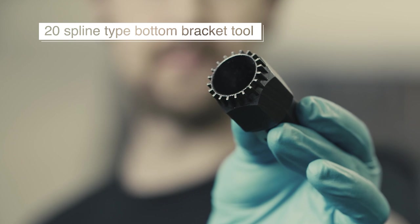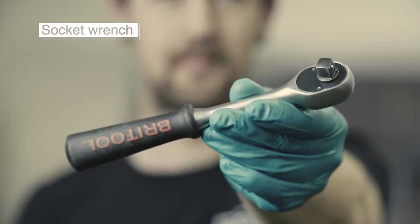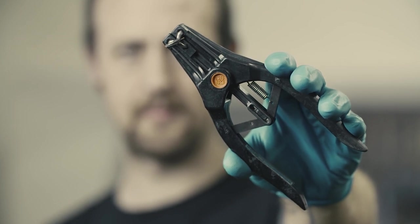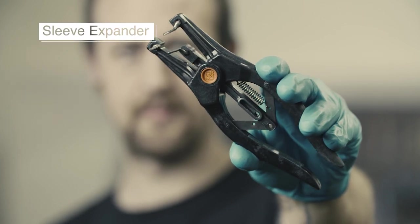You'll also need a 20 spline type bottom bracket tool, a socket wrench and torque wrench. There is also a small grommet to fit in the bottom bracket cable that requires a sleeve expander to fit it.